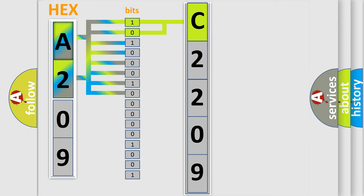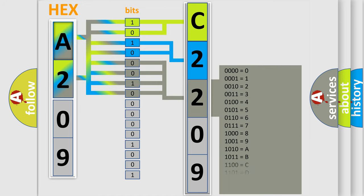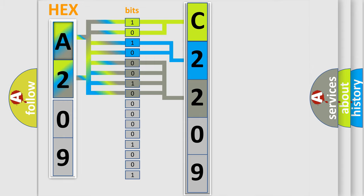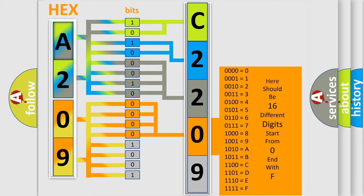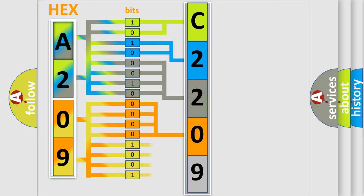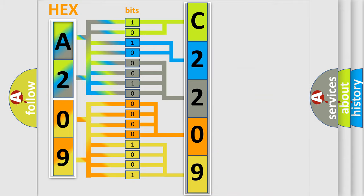The next two bits determine the second character. The last bits of the first byte define the third character of the code. The second byte is composed of a combination of eight bits. The first four bits determine the fourth character of the code, and the combination of the last four bits defines the fifth character. A single byte conceals 256 possible combinations.